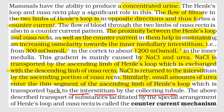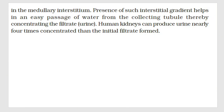So urea circulates to set the concentration gradient — it stays in the medullary interstitium for a while, then enters the thin segment of ascending limb of loop of Henle, then goes to the collecting tubule, and comes back to the interstitium in some amount. The above described transport of substances, facilitated by the special arrangement of Henle's loop and vasa recta, is called counter current mechanism. The presence of this interstitial gradient helps in easy passage of water from the collecting tubule, thereby concentrating the urine. Human kidney can produce urine nearly four times concentrated than the initial filtrate formed.